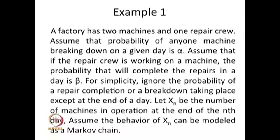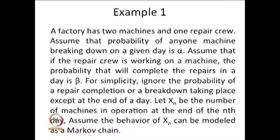Assume that the probability of any one machine breaking down on a given day is alpha. Assume that if the repair crew is working on a machine, the probability that they will complete the repairs in a day is beta. For simplicity, ignore the probability of a repair completion or a breakdown taking place except at the end of the day — that means we observe the system at the end of the day to count how many machines are working.